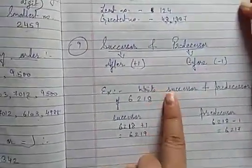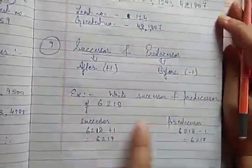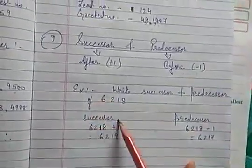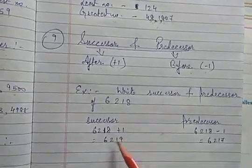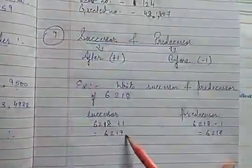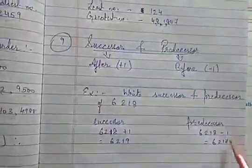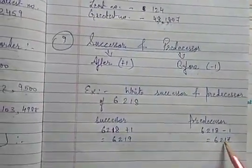So I have written here, write successor and predecessor of 6218. So successor means plus 1, so we will add 1 here and it becomes 6219. And predecessor means minus 1, so it comes 6217.